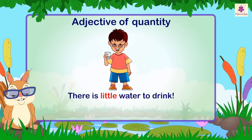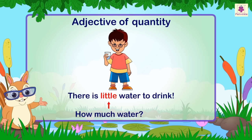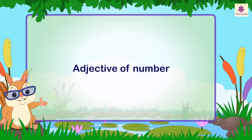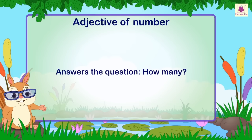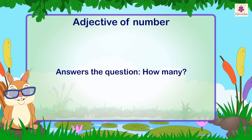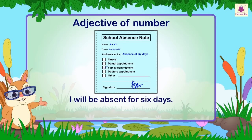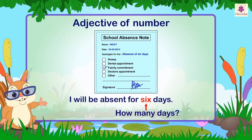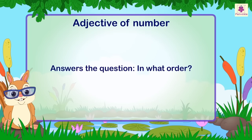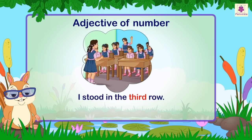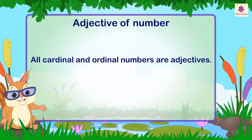'Little' answers the question 'how much water?' Adjective of number: an adjective of number answers the question 'how many?' For example: I will be absent for six days. 'Six' answers 'how many days?' Adjectives of number also answer 'in what order?' For example: I stood in the third row. All cardinal and ordinal numbers are adjectives.